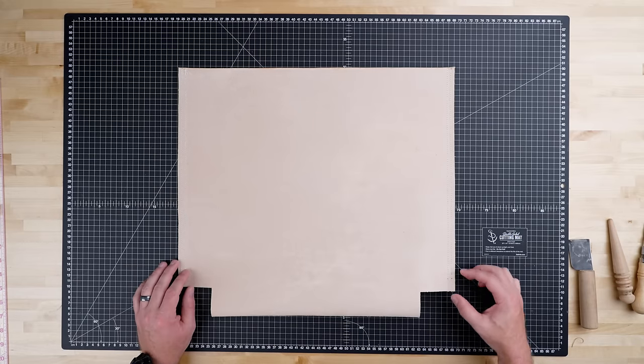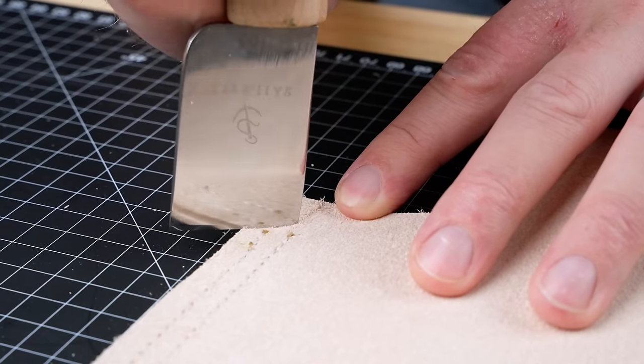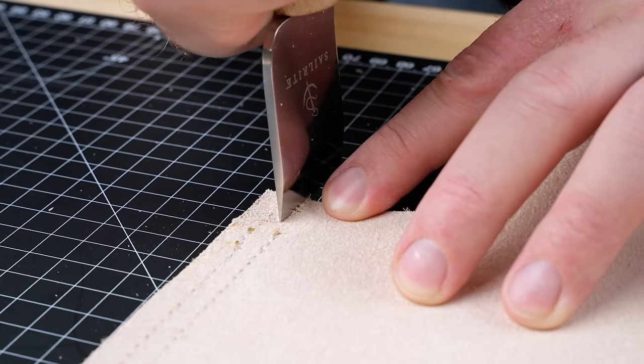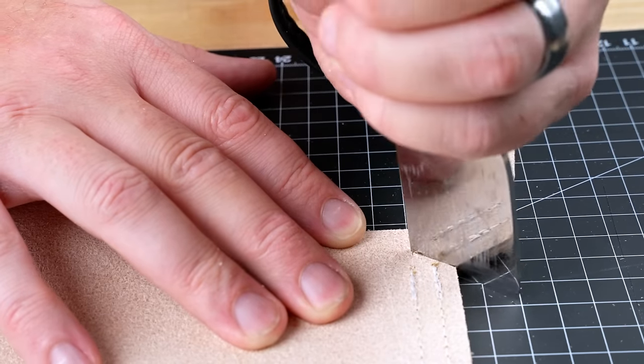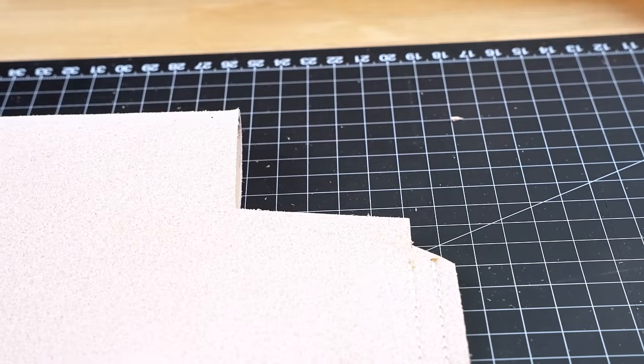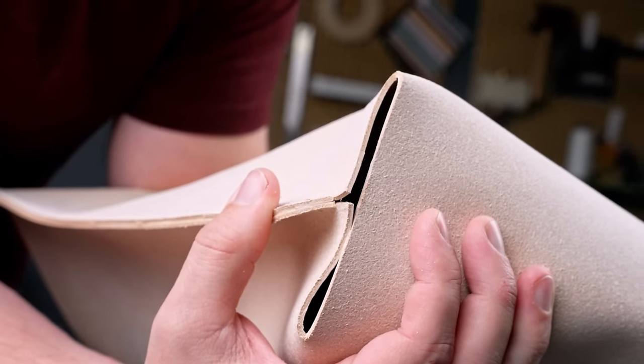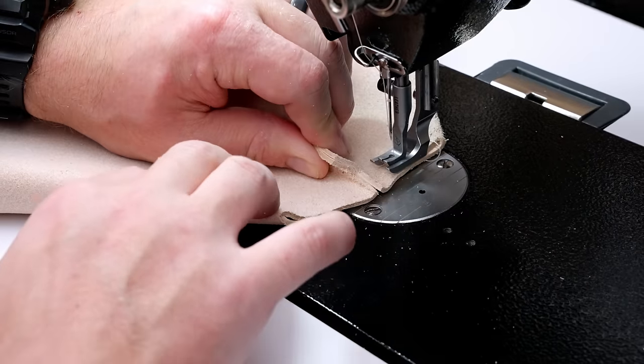Now we're gonna cut a notch on both corners where we left it unsewn. Now with these notches cut out, it'll be much easier to sew. Let's head over to the sewing machine and sew it.